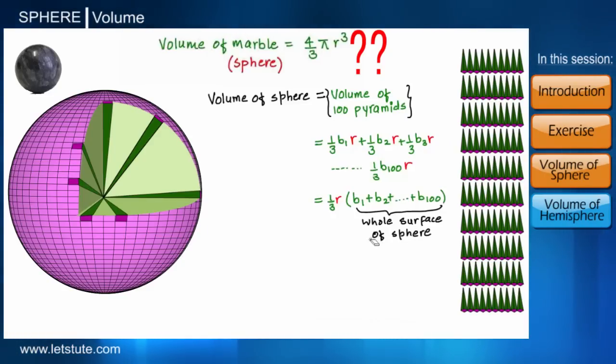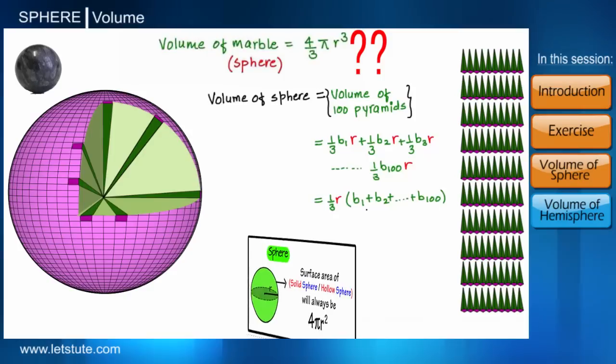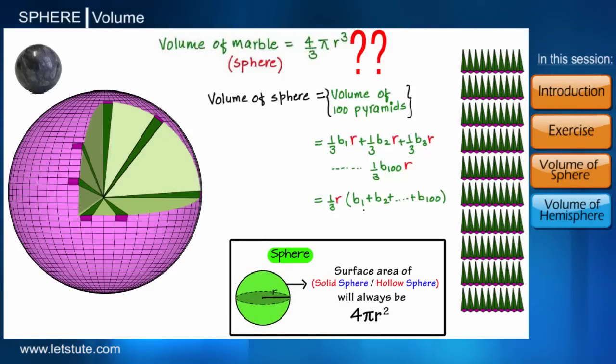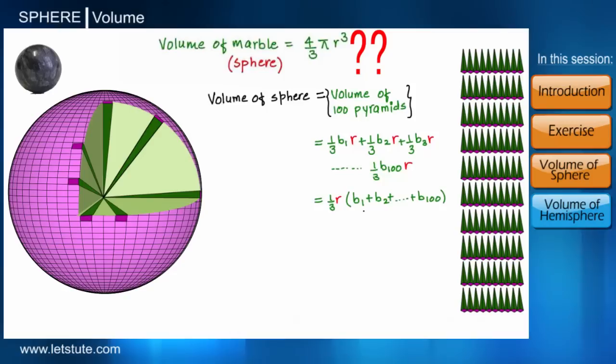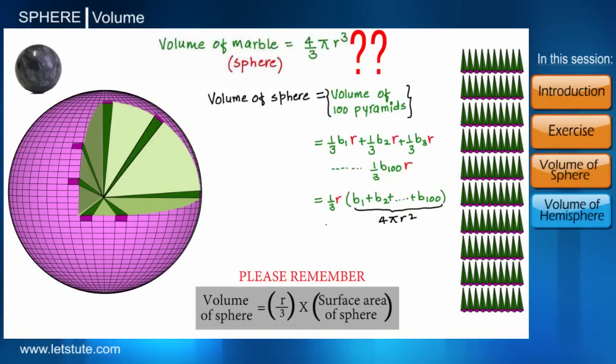Which we have already learned in our previous session, which is 4πr². And therefore we get the formula as 4/3 πr³. So this is how we derive the formula for volume of a sphere.